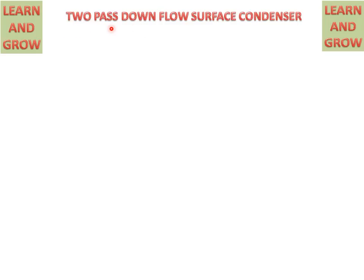2 pass means water will circulate through 2 tube sections. Downflow means steam will come from the top and go down. Surface condenser is a non-mixing type condenser in which water and steam will not mix with each other.